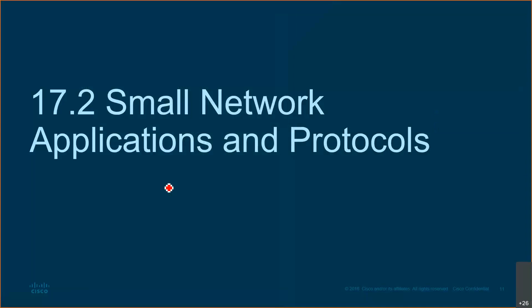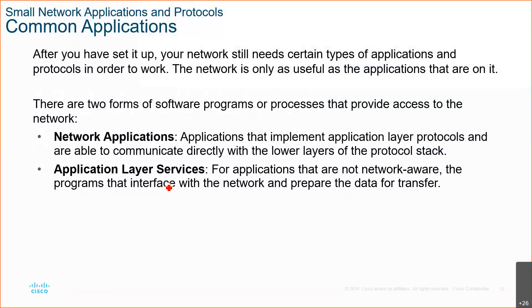Small network applications and protocols are applicable to small networks but also to large networks. Two forms of software programs that provide access to the network are network applications and application layer services. The most important of these is a network operating system — you cannot have an operating system that is not network enabled. You should have services that allow you to transfer data, and all these things should be part of your plan.